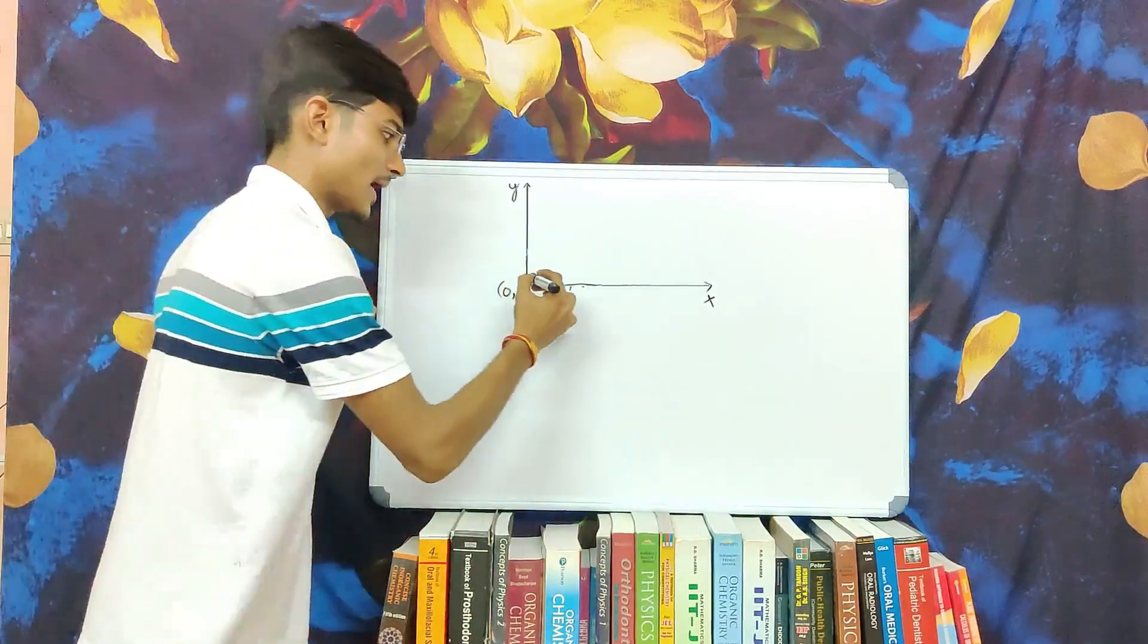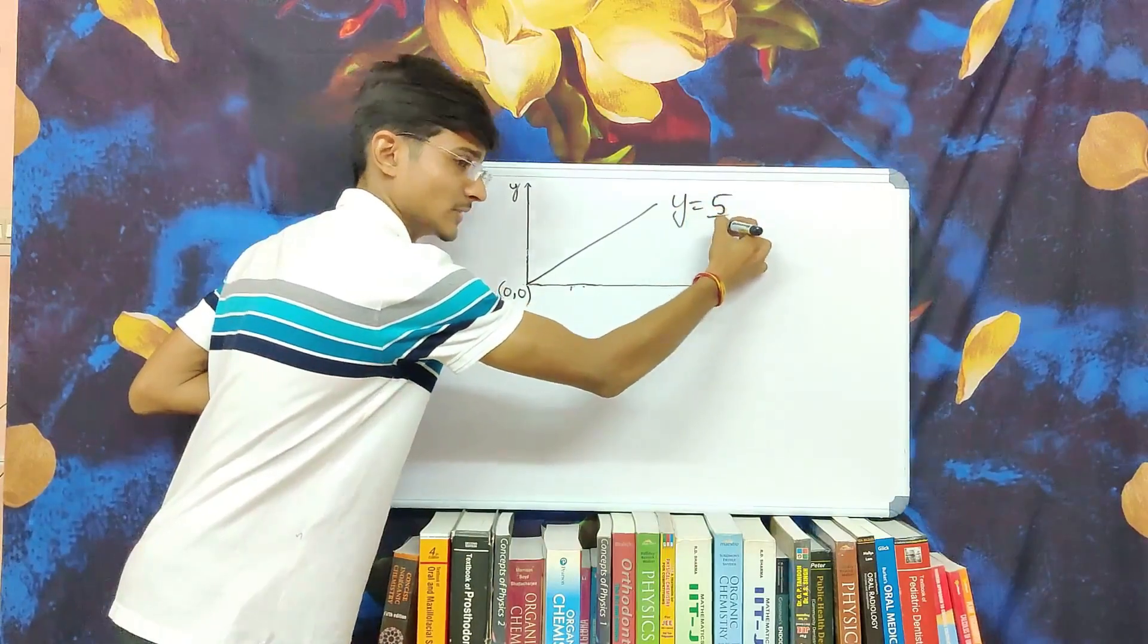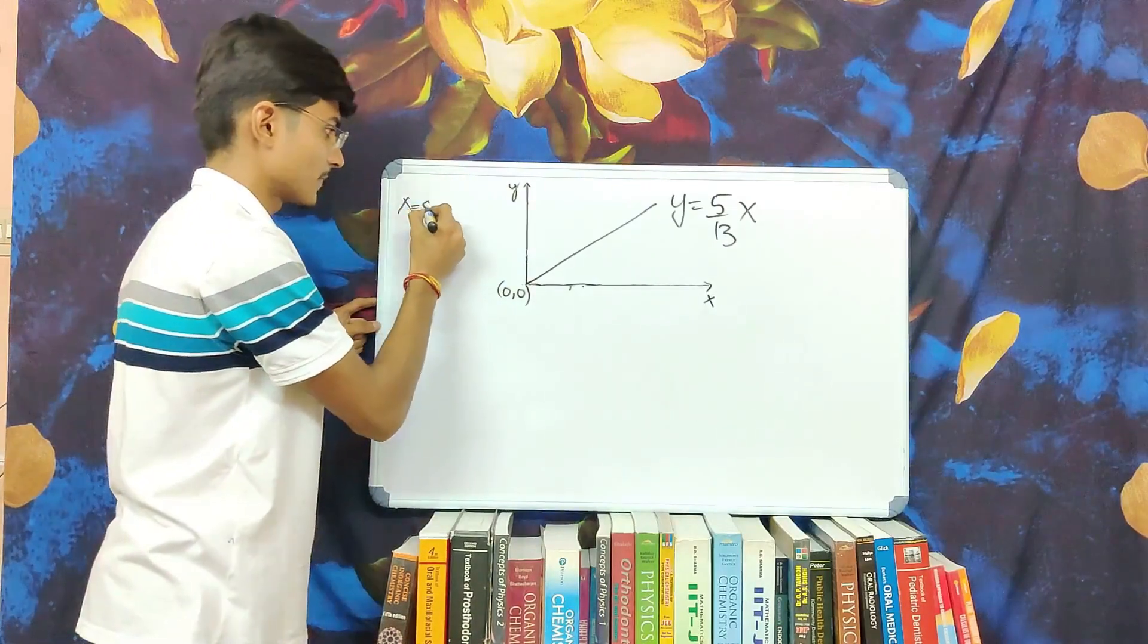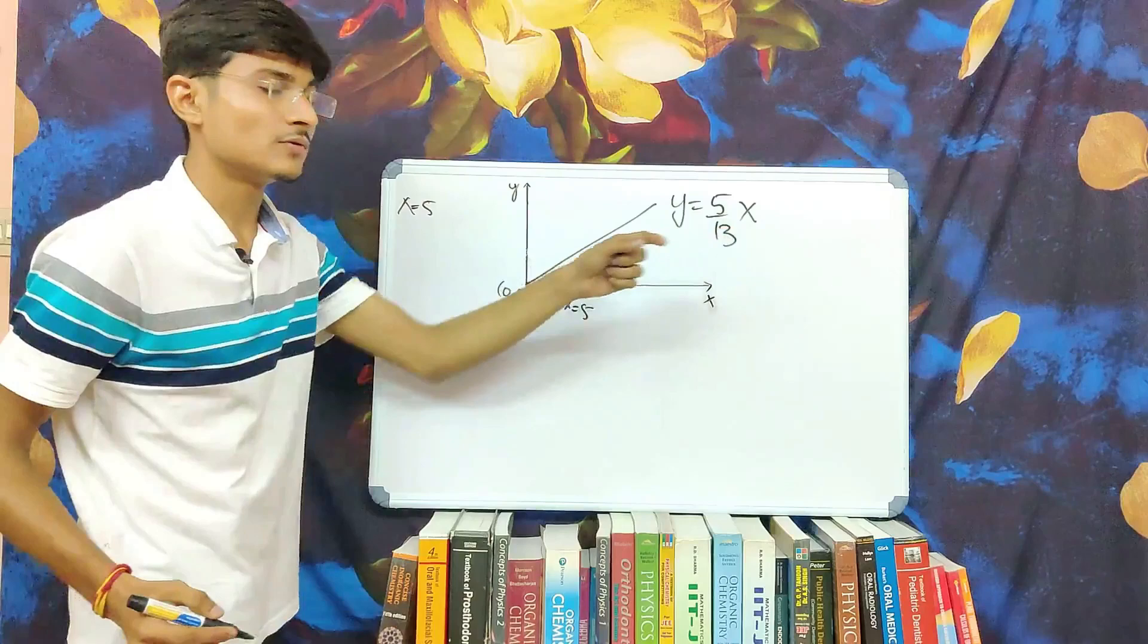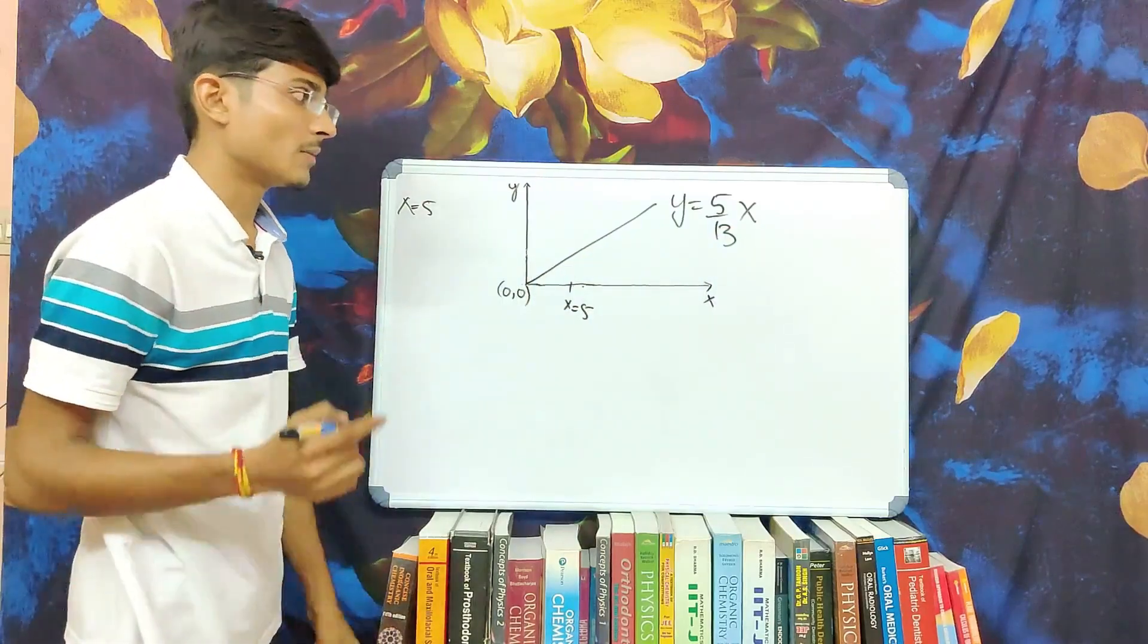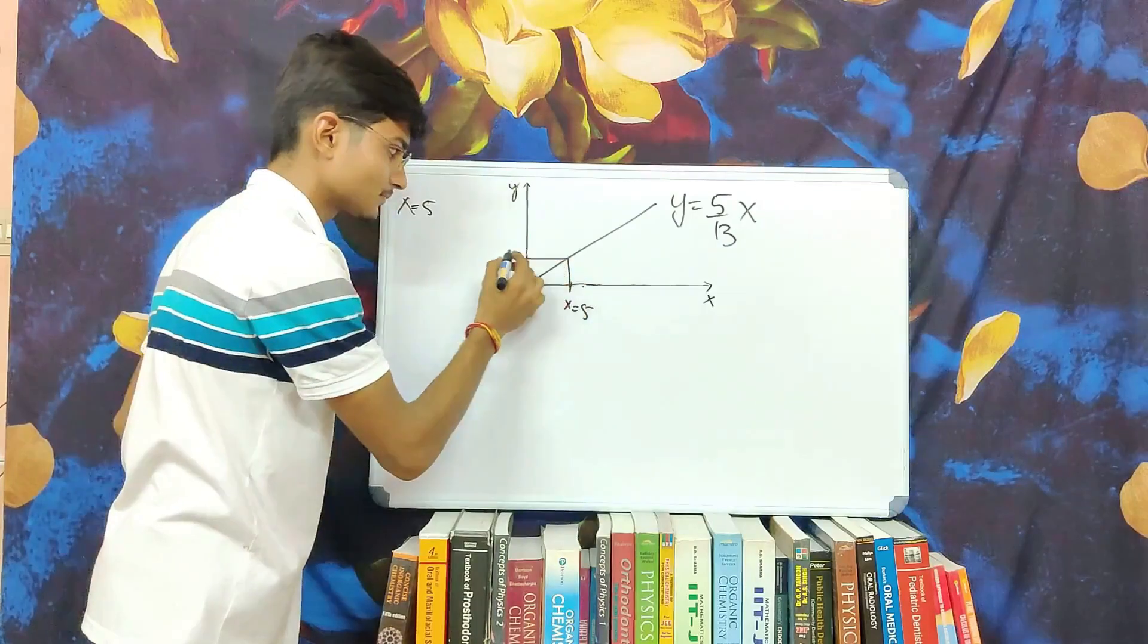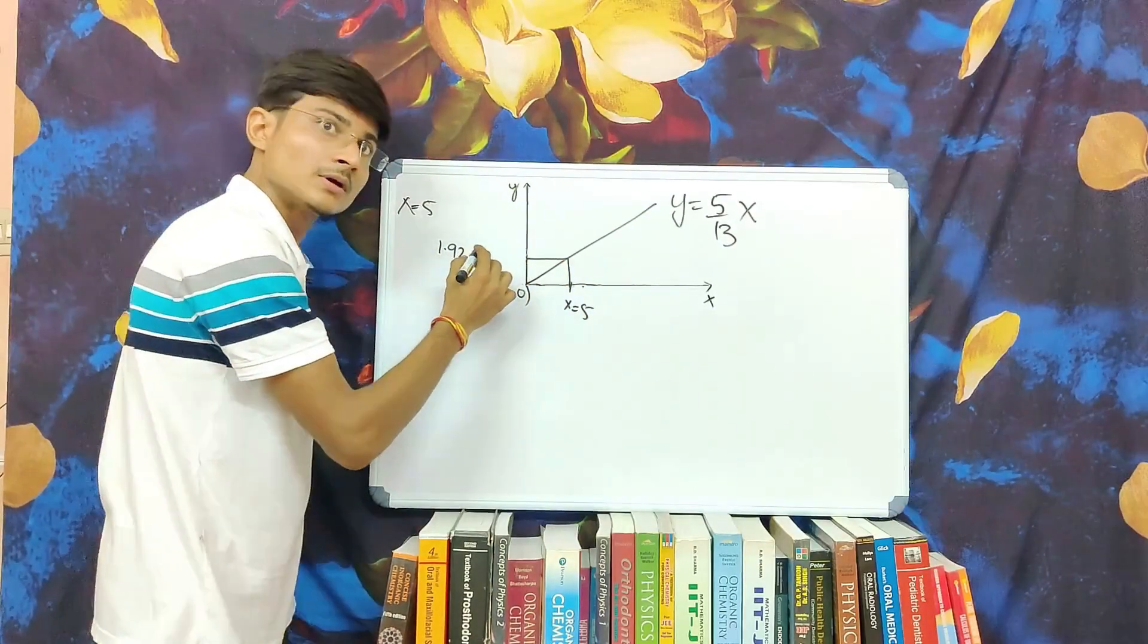We will start with the line y equal to 5 by 13x which is the hypotenuse of the larger triangle. At x equal to 5, on substitution we should get y equal to 2 but what we get is 25 by 13 which is 1.92307692.